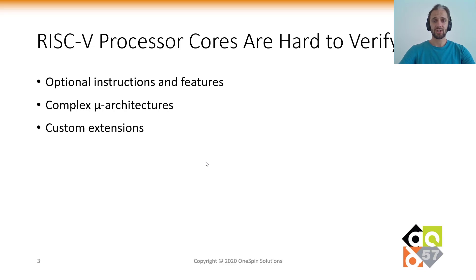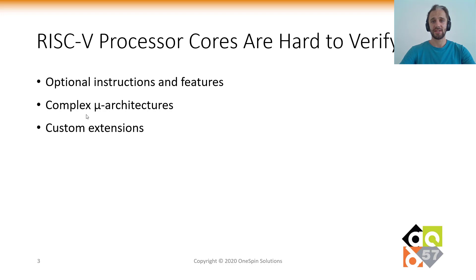But such verification is not easy. There are numerous optional instructions and features available for users to use. And there are plenty of complex microarchitecture choices, such as the pipeline depth, having branch prediction, the execution — whether it's in order or out of order — and having single issue or multiple issue pipeline, and so on.